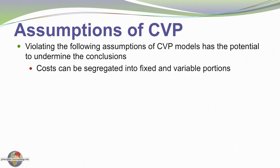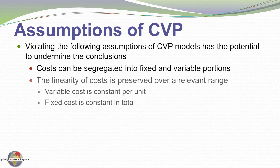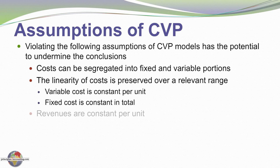First of all we make a big assumption that costs can be separated into fixed and variable components. We also need to assume linearity of those costs — that is, over the entire relevant range of production or expectations, variable cost is constant per unit and fixed cost is constant in the aggregate.